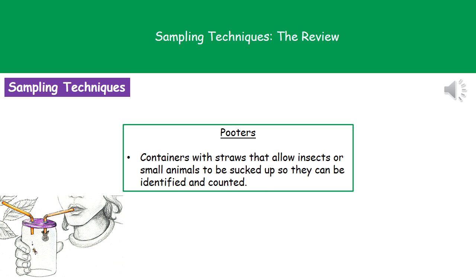The next technique is a pooter. If we want to count small organisms like ants, they're liable to move around making it difficult to count them in situ. A pooter is a small container with two straws — one importantly has a mesh covering over it. You suck through the one with the mesh covering, placing the other straw near the insect. The insect is sucked into the container where you can count and identify them easily.